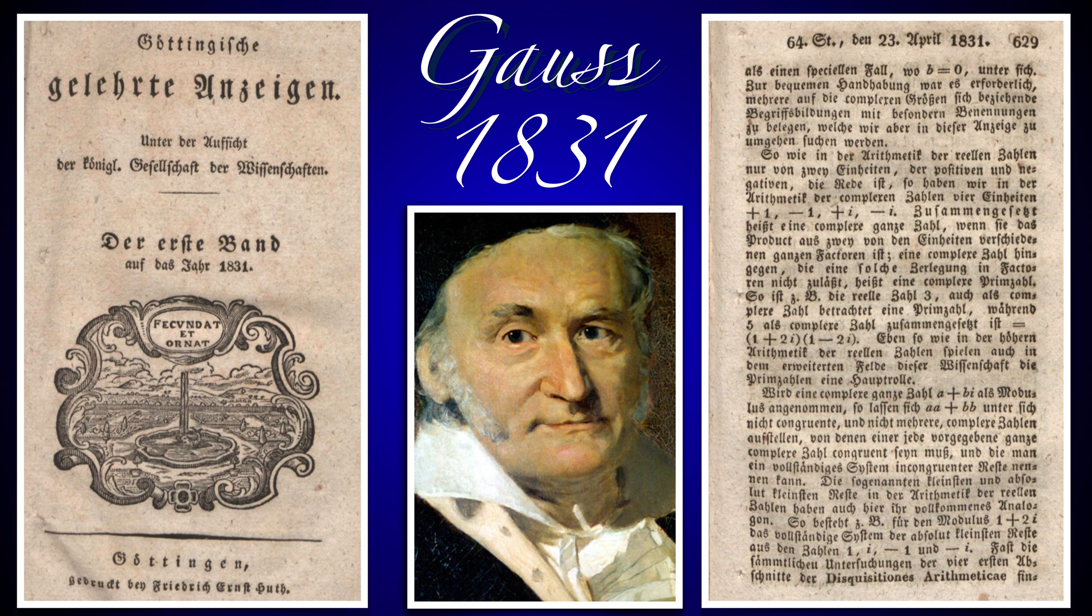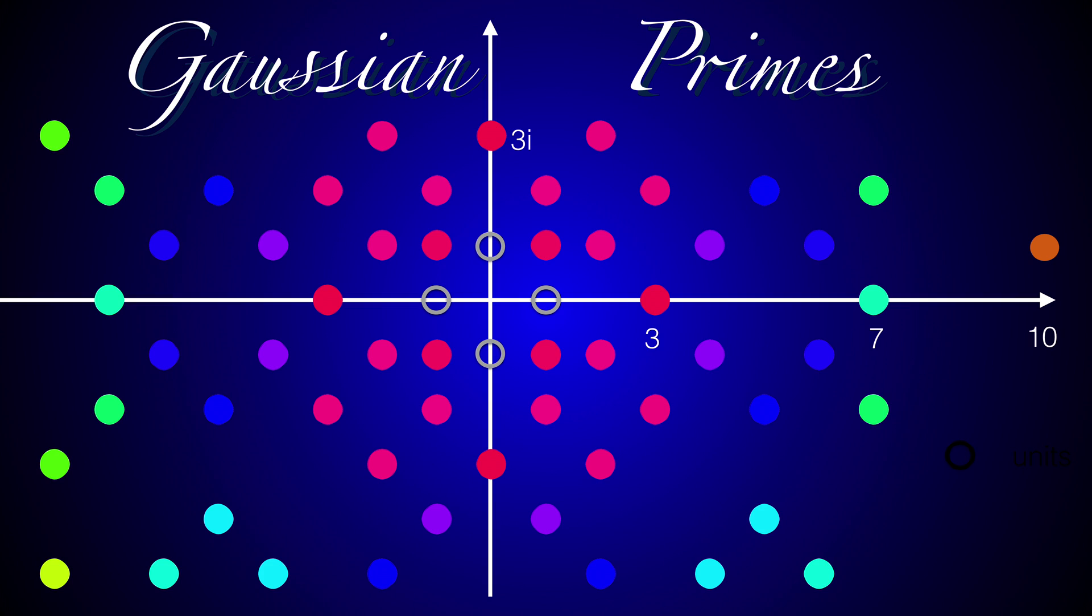The Gaussian integers and their primes were introduced by Gauss in 1831. We see on this slide Gauss's paper showing the first appearance of this concept. Here the Gaussian primes are plotted in the complex plane. The primes are Gaussian integers a+ib which are only divisible by a unit or by itself. The units are 1, -1, i, and -i.